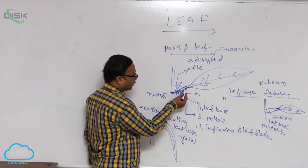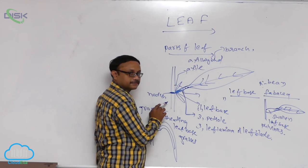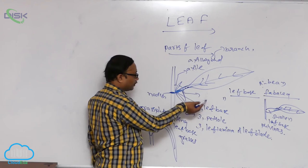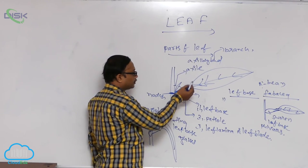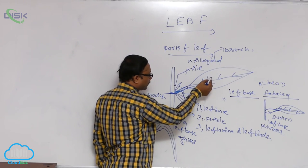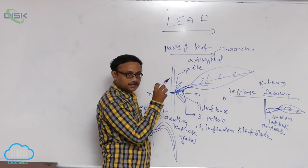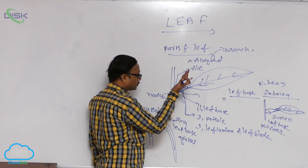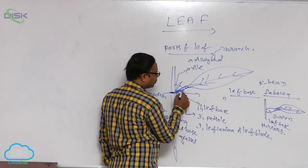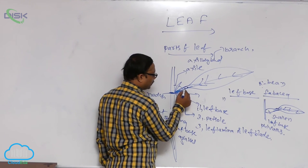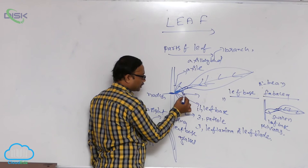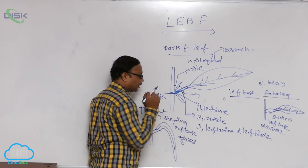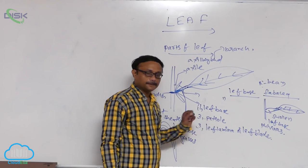The petiole has two functions. First, the lamina is exposed to sunlight through the presence of the petiole. Second, the leaves flutter — that is, swing — in the air due to the petiole, and this causes the leaf temperature to decrease. These two functions are performed by the petiole.